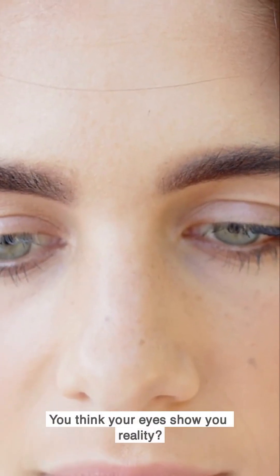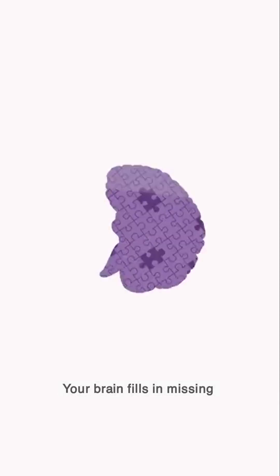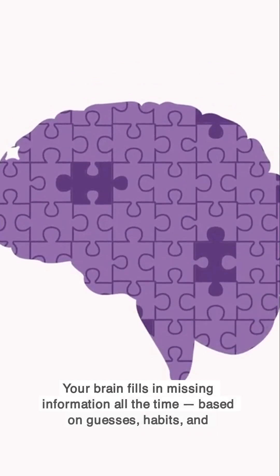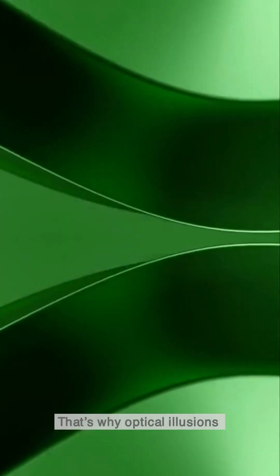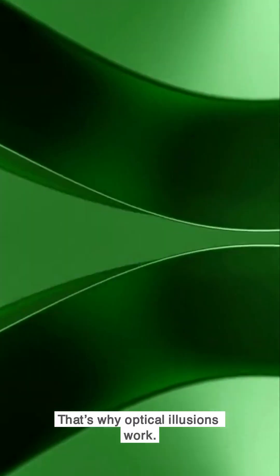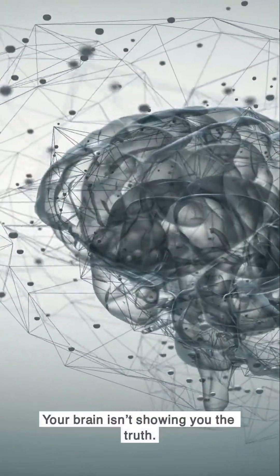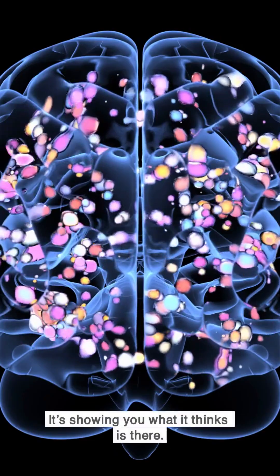You think your eyes show you reality, they don't. Your brain fills in missing information all the time, based on guesses, habits, and shortcuts. That's why optical illusions work. Your brain isn't showing you the truth. It's showing you what it thinks is there.